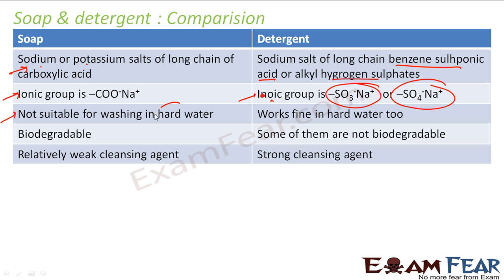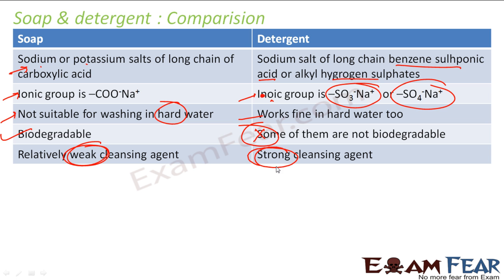Soap is not suitable for washing in hard water, while detergent works fine in hard water. Soap is biodegradable, but some detergents are not biodegradable. Soap is a weak cleansing agent, whereas detergent is a strong cleansing agent. That is the difference between soap and detergent.